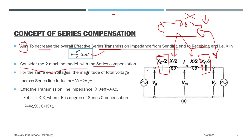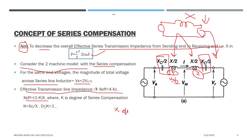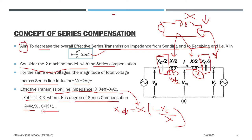If we calculate the voltage, it will be divided as Vx/2 on each side. The total series inductor voltage Vx equals 2·(Vx/2). So effective transmission line impedance X_effective equals X minus X_C, which equals X·(1 − X_C/X) = X·(1 − K), where K is my degree of series compensation. K can be varied from 0 to 1.